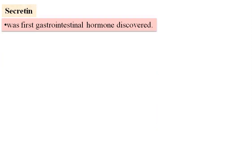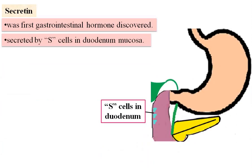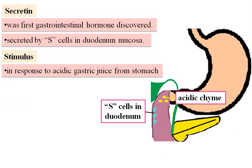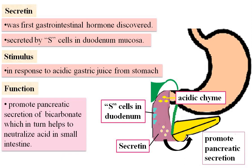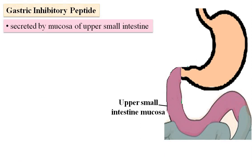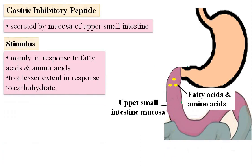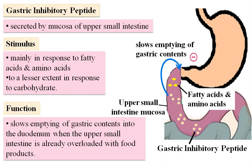Secretin was the first gastrointestinal hormone discovered. It is secreted by S cells in the duodenum mucosa. When acidic gastric juice from the stomach arrives in the small intestine, S cells secrete secretin. Secretin promotes secretion of bicarbonate from the pancreas, which helps to neutralize acid in the small intestine. Gastric inhibitory peptide is secreted by mucosa of the upper small intestine. When fatty acids and amino acids enter the small intestine, gastric inhibitory peptide is released. It slows emptying of gastric content into the duodenum when the upper small intestine is already overloaded with food products.